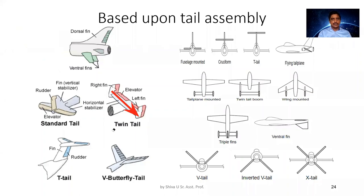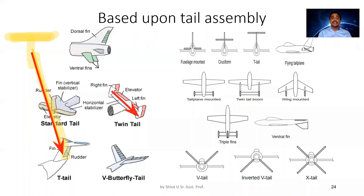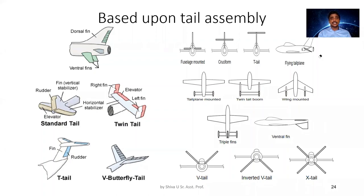When the horizontal stabilizer is shifted to the tip of the vertical stabilizer, that configuration is called a T-tail configuration — it looks like a T shape. In the butterfly or V-tail configuration, the vertical stabilizer is missing and only V-shaped surfaces remain.